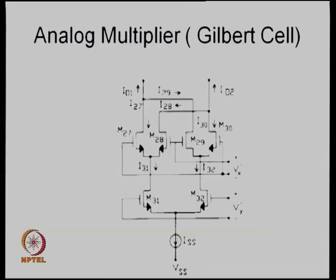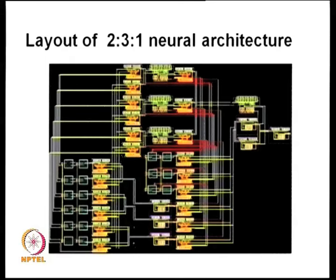A typical analog multiplier is the Gilbert cell — a very famous circuit consisting of two differential amplifier pairs combined, acting as three diff amps. It is a current multiplier and that is its strength. A 2-3-1 neural network architecture for a processor was designed by a student around 1994-95.